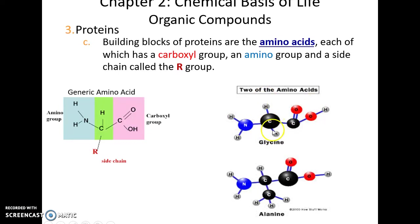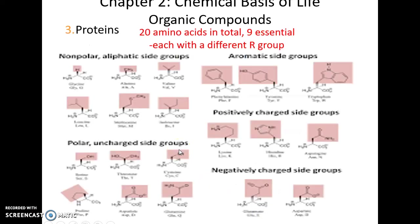For instance, glycine has an R group that is a hydrogen, while alanine has an R group that is a methyl group — a carbon with three hydrogens. There are 20 different amino acids used by humans, and nine of these are essential, meaning they have to be included in our diet.